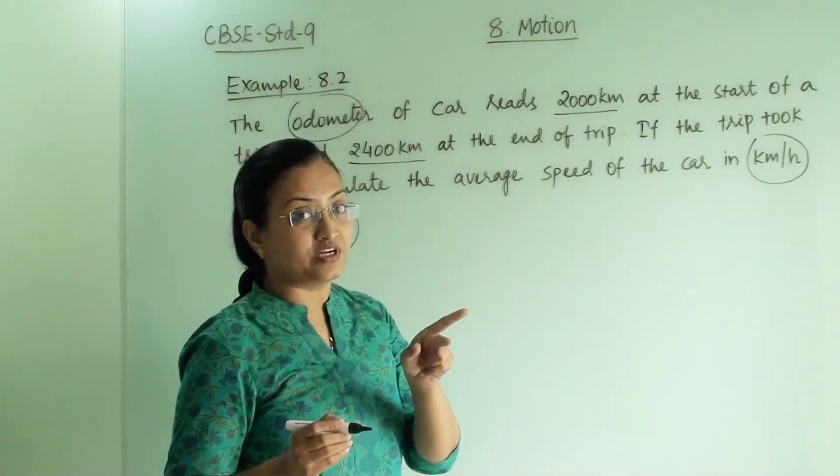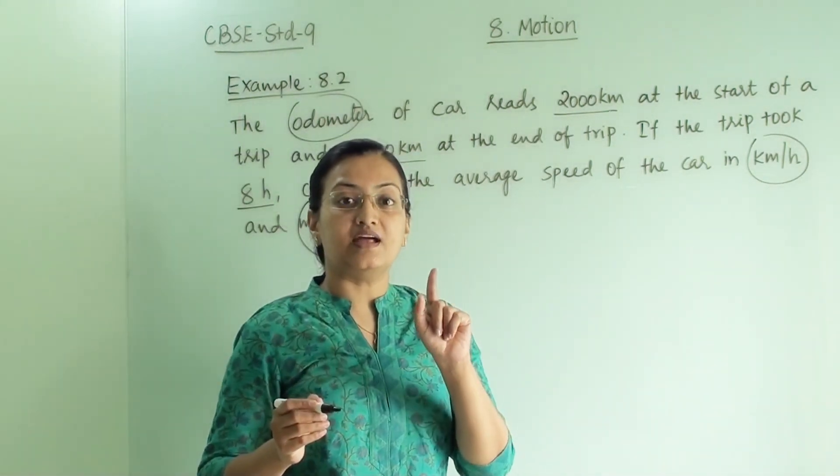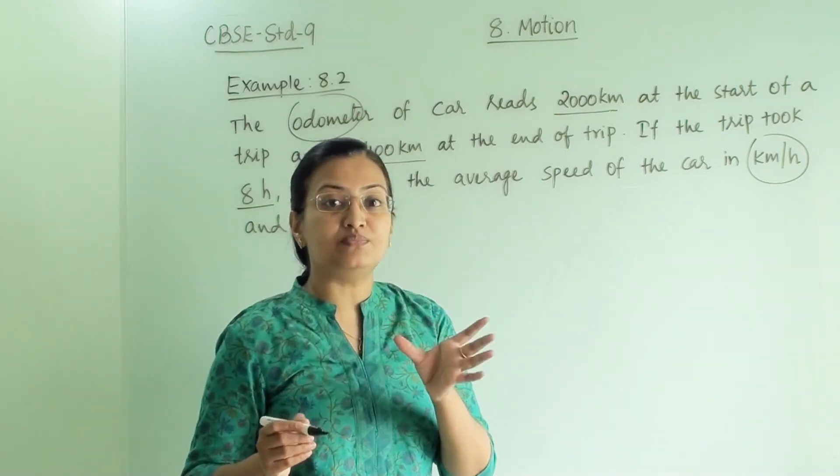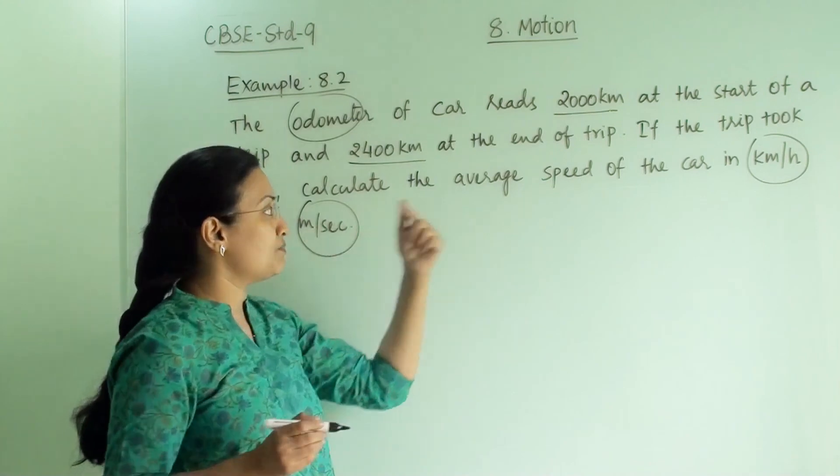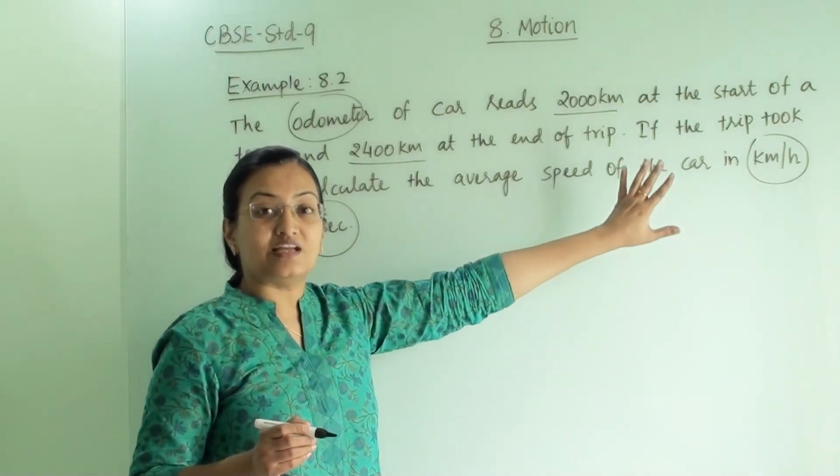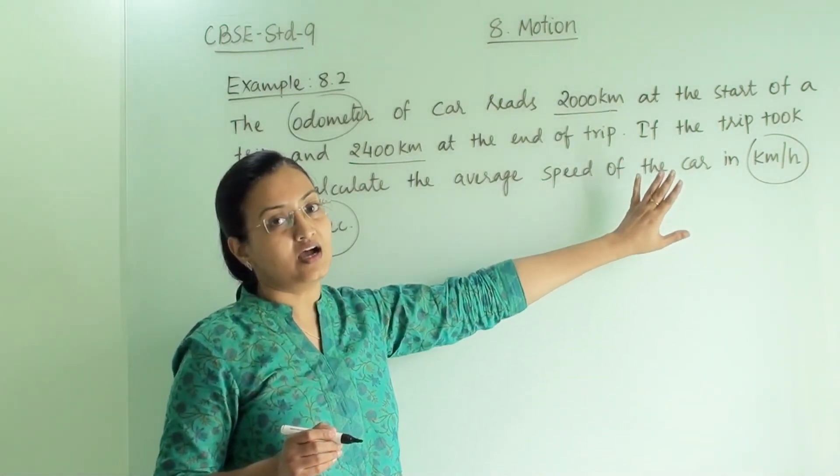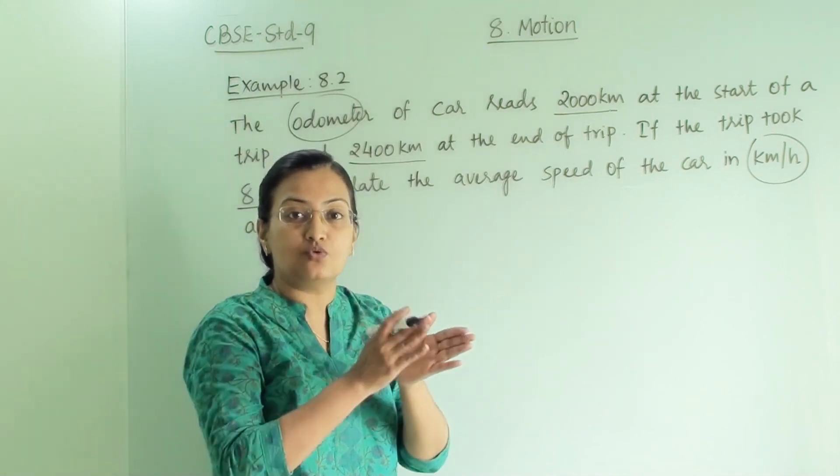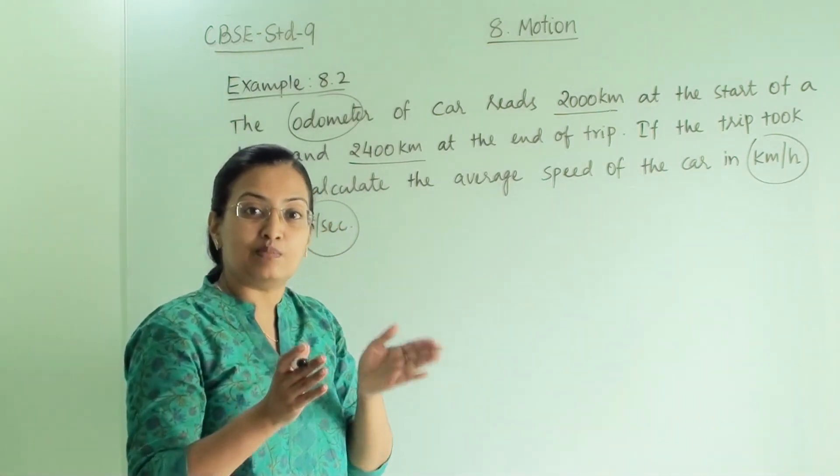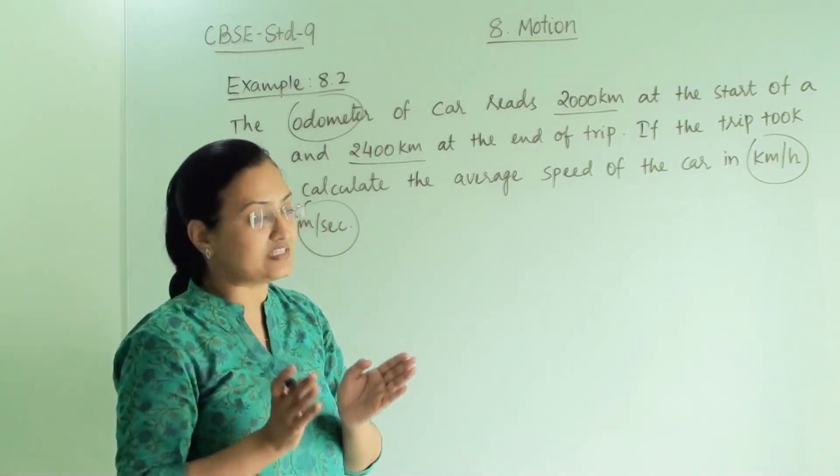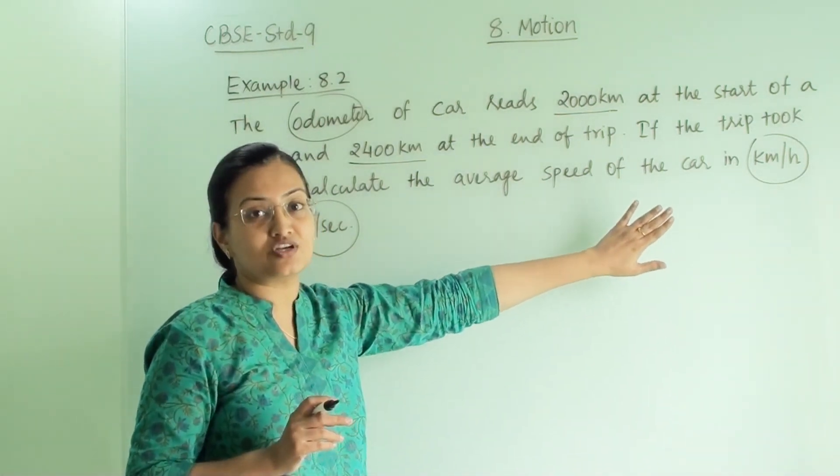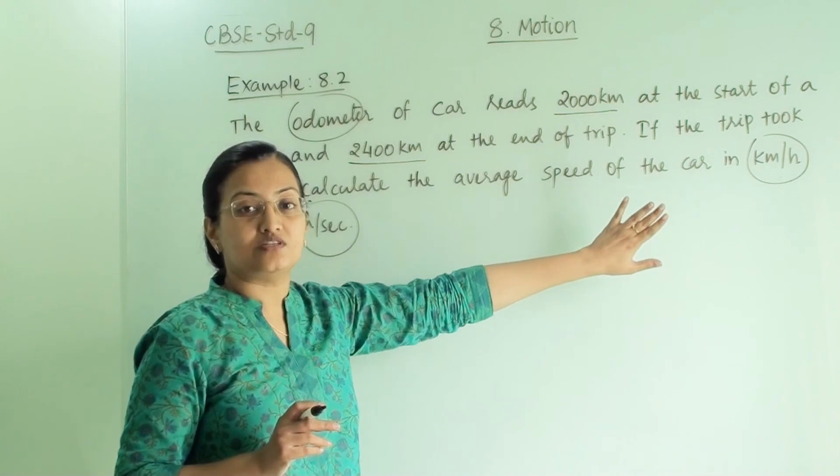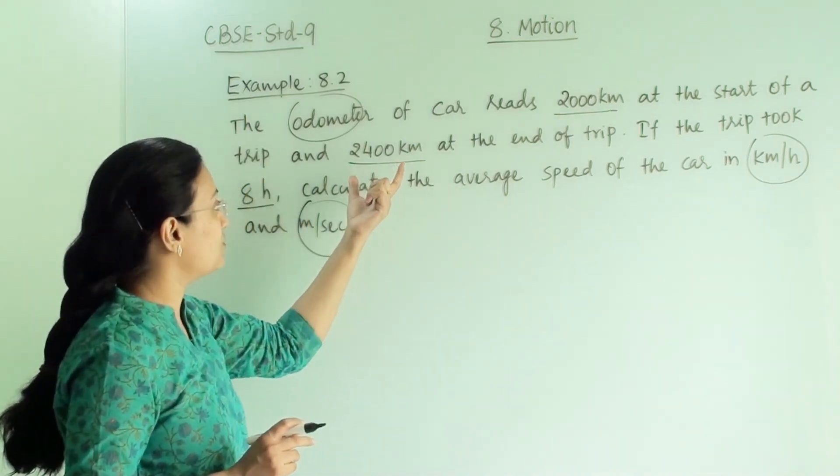So there are two different units: km per hour and meter per second. You cannot mix this unit like km per second and meter per hour. Km always goes with hour and meter always goes with second. We will see the conversion factor of km per hour later. First let us find out the answer.